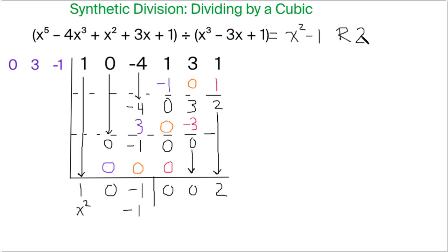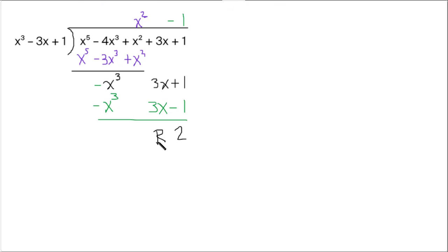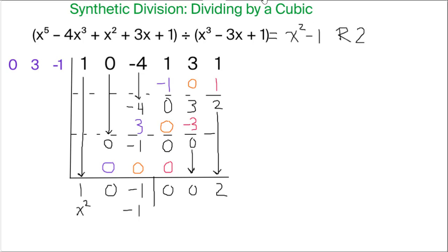So same quotient, x squared minus 1 we got over here. And same remainder of 2 we got in the synthetic division. So that's just demonstrating another way that it does work out to the same thing.